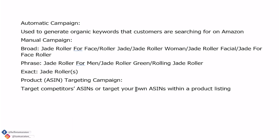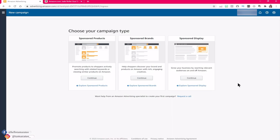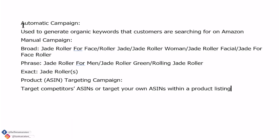Don't go and source a jade roller — it's a very bad product, I'm just using it as an example. If you are brand registered with Amazon, you have additional options such as headline search ads, sponsor display ads, and other features under Sponsor Brands and Sponsor Display. We won't dive into that today. Now that you know the differences between all of these campaigns, we can talk about structuring your campaigns.